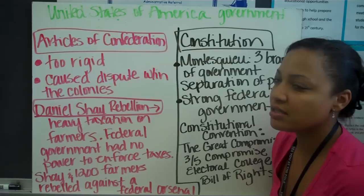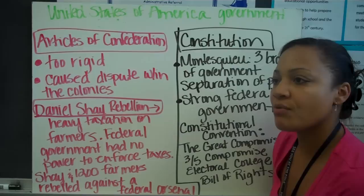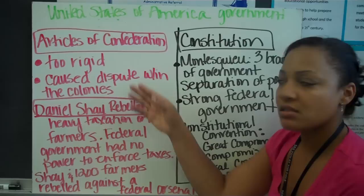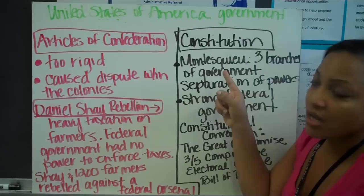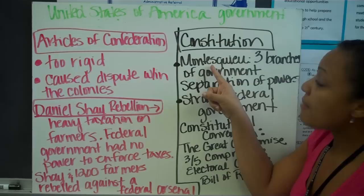At this point, founding fathers such as George Washington and James Madison — Thomas Jefferson could not attend the Constitutional Convention — said they needed to change the government or make changes to the Articles of Confederation. I'm going to talk more about the Articles of Confederation on the next board, which is going to lead to the Constitution.